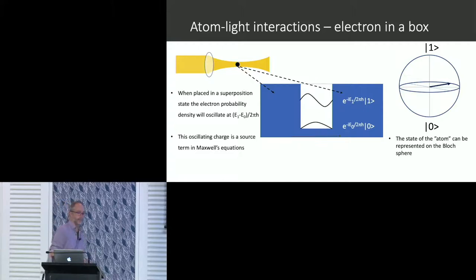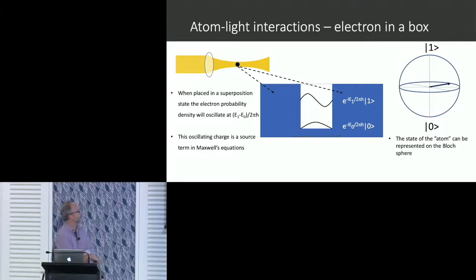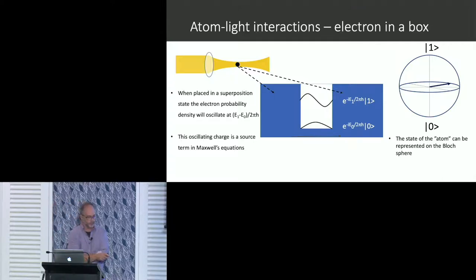Winding back to really basic concepts: when talking about light-matter interaction, we've got a laser beam and we're going to shine it on an atom or an atom-like system. Here's a semi-classical picture of how to think about this. If we just take our atom — I've given you an electron sitting in a square well potential — you've got your ground state and first excited state, which are stationary eigenstates.